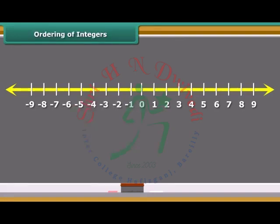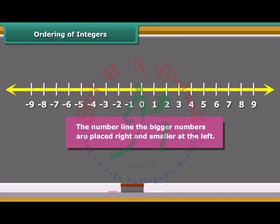Let us again observe the integers which are represented on the number line. We know that 9 is greater than 5 and on number line 4 points right of 5. Similarly, 5 is greater than zero so placed right to it. Since zero is to the right of minus 2, it is greater than minus 2. Again, minus 2 is on the right of minus 7, so minus 2 is greater than minus 7. Thus we see that on the number line, the bigger numbers are placed right and smaller at the left.